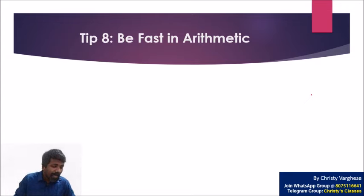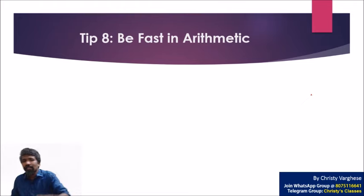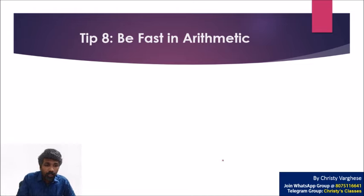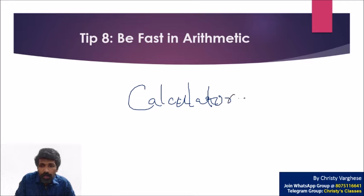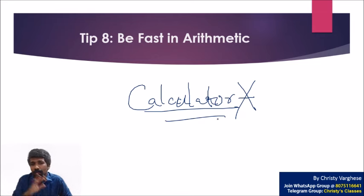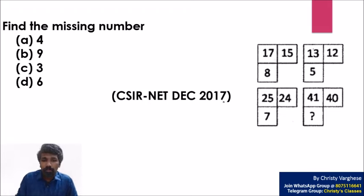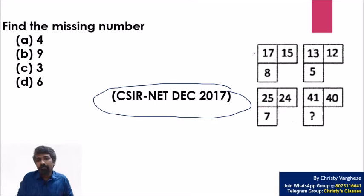The eighth tip: you need to be fast in arithmetic for some quantitative aptitude problems. Logical reasoning problems require no math, but quantitative ones do. Also, no calculator is allowed in CSIR NET — unlike GATE where it is allowed. Even in the current online format of CSIR NET, calculators are not permitted. A December 2017 NET exam series problem illustrates this: the series 17, 15, 8 is based on Pythagorean triplets.